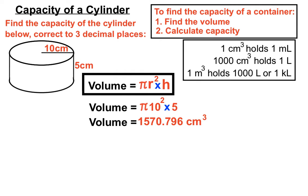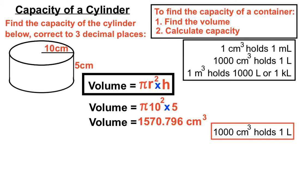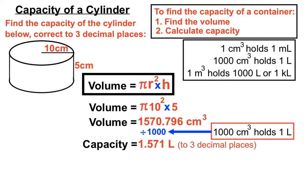Now we look at our capacity facts to see what suits us. We want a fact that works with centimetres cubed: every one thousand centimetres cubed holds one litre. We use that fact to determine how many thousands of centimetres cubed fit into 1,570.796 — that's how many litres we'll have. Dividing by a thousand gives us a capacity of 1.571 litres, correct to three decimal places. We found the volume, then used our capacity facts to convert from centimetres cubed to litres.